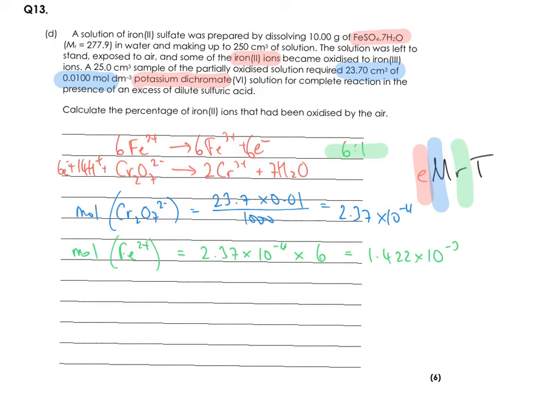Then as ever we've got a multiplication to do because we've got 250 centimeters cubed and we took 25 from that. So our moles of Fe2 plus in 250 centimeters cubed equals 1.422 times 10 to the minus 3 times by 10 which equals 1.422 times 10 to the minus 2. Now you can get to that point without having to really understand what the question wants you to do by following those steps.